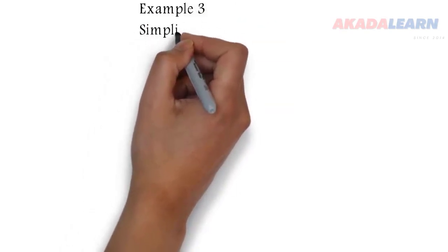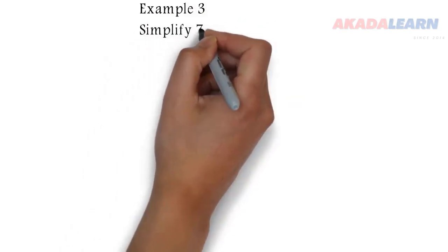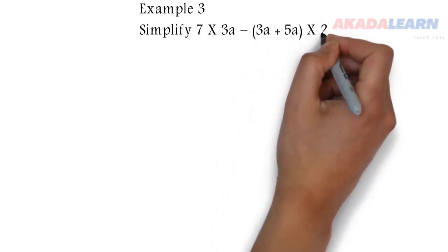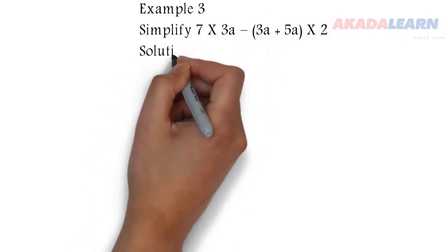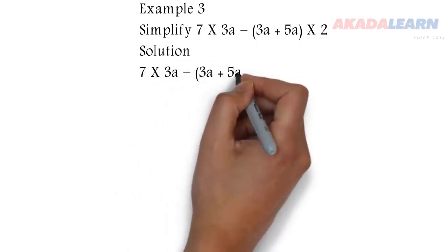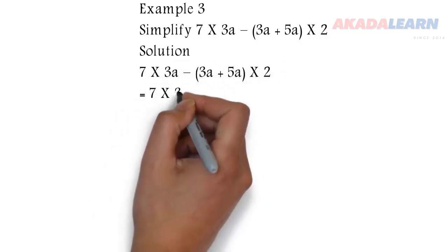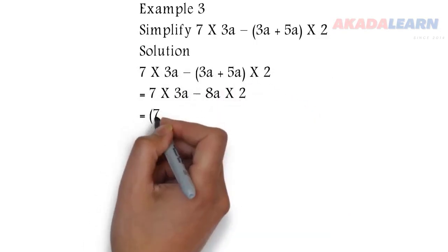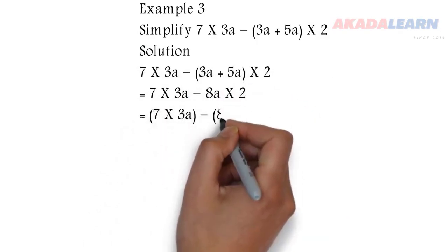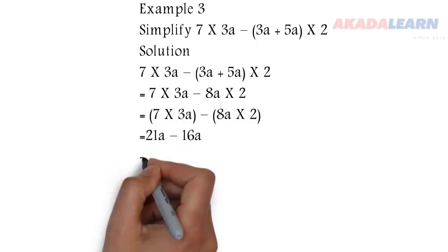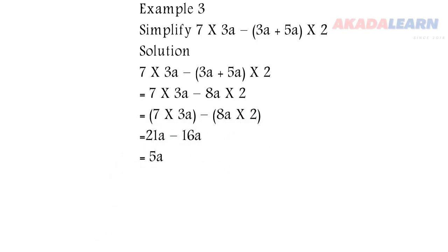Let's see example 3. Simplify 7 times 3A minus bracket open 3A plus 5A bracket close times 2. Now from BODMAS, the first thing is our bracket. So we simplify what is inside the bracket: 3A plus 5A is 8A. So now we can multiply the first two and the last two, and we get 21A minus 16A, and we get 5A because they are like terms.